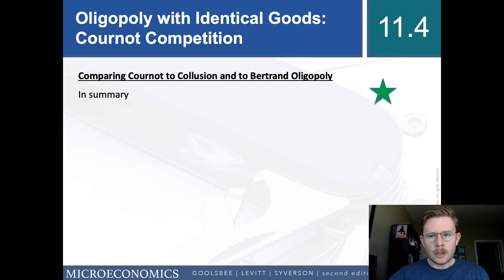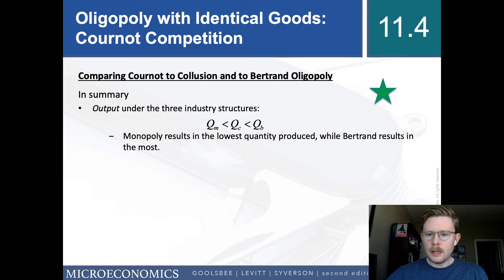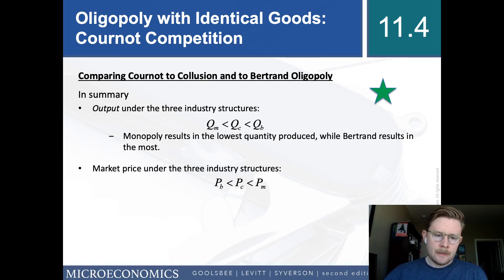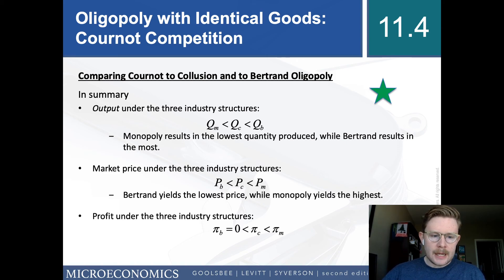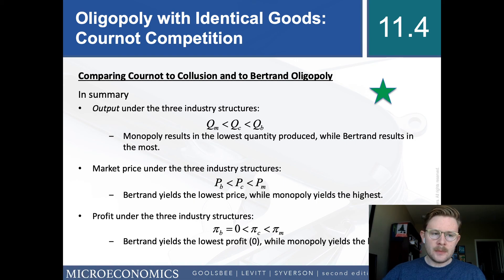Let's finish by comparing Cournot to collusion and Bertrand oligopolies. In terms of output, the lowest is in the monopoly (collusion) case, the middle output is in the Cournot case, and the highest output is in the Bertrand case. The opposite is true for prices: Bertrand price is lowest, Cournot price is in the middle, and monopoly price is the highest. For profits, Bertrand profit is zero, Cournot profit is positive, and monopoly profits are the highest.